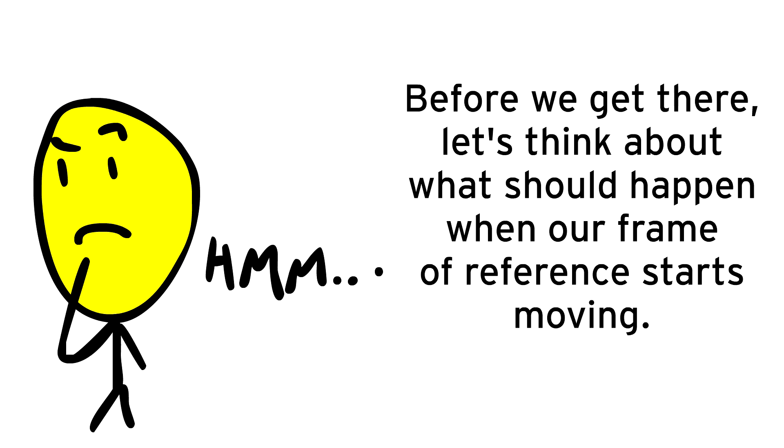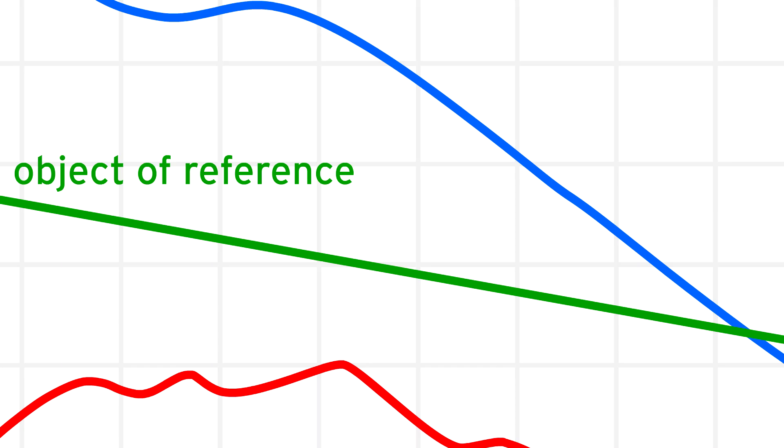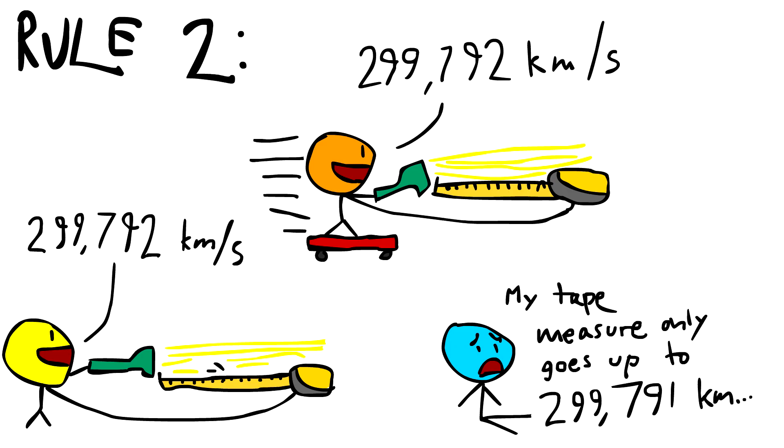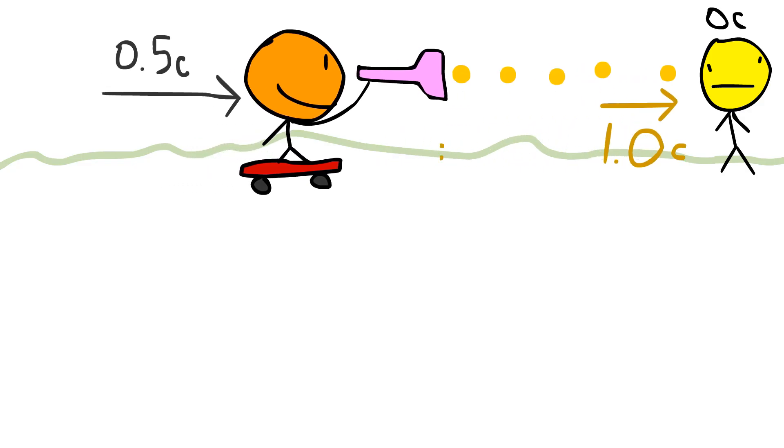Before we get there, let's think about what should happen when our frame of reference starts moving. First of all, the object we're following has to stay still, meaning its line on our space-time graph must stay horizontal. Secondly, the speed of light must stay constant, meaning exactly one-to-one diagonal. Light always moves one light year in a year, no exceptions.